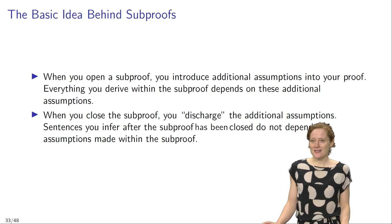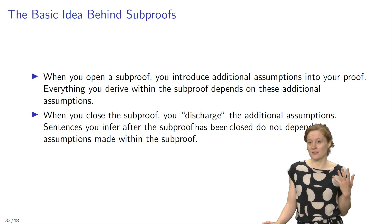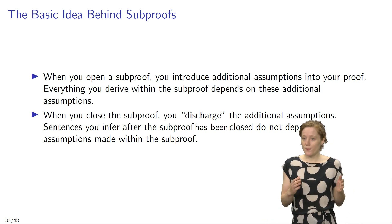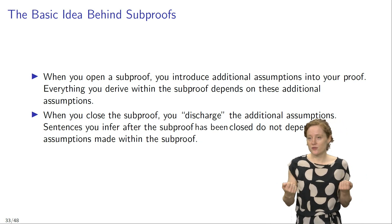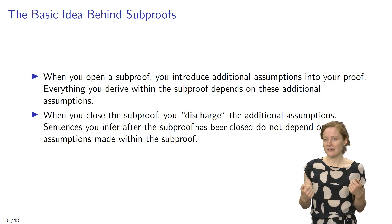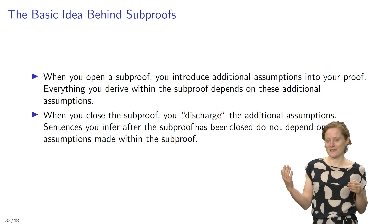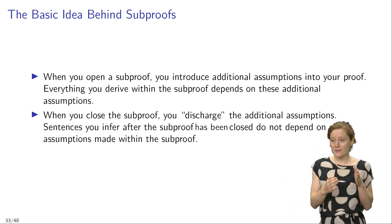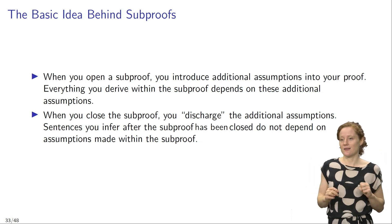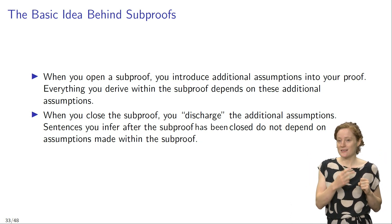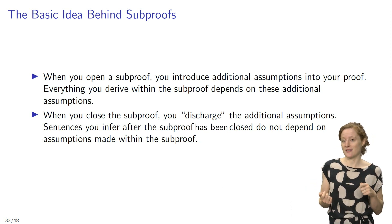In each of these cases, the basic idea behind sub-proofs is that they symbolize the introduction of additional assumptions into your proof. So whenever you open a sub-proof — meaning whenever you draw an additional vertical line — you introduce additional assumptions into your proof. And everything that you derive within the sub-proof depends on these additional assumptions. And then when you close the sub-proof, meaning the additional vertical line ends, you discharge these additional assumptions. So sentences which you infer after the sub-proof has been closed do not depend on assumptions made within the sub-proof.